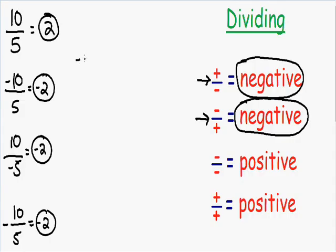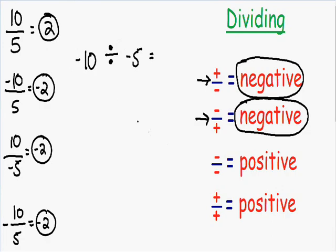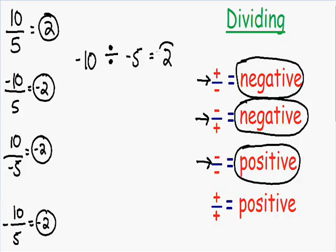Let's go over one more example: negative ten being divided by negative five. This time we have two negatives — a negative being divided by another negative. Just like multiplying, two negatives are going to give us a positive answer. The negatives cancel each other out, so negative ten divided by negative five is going to be positive two.